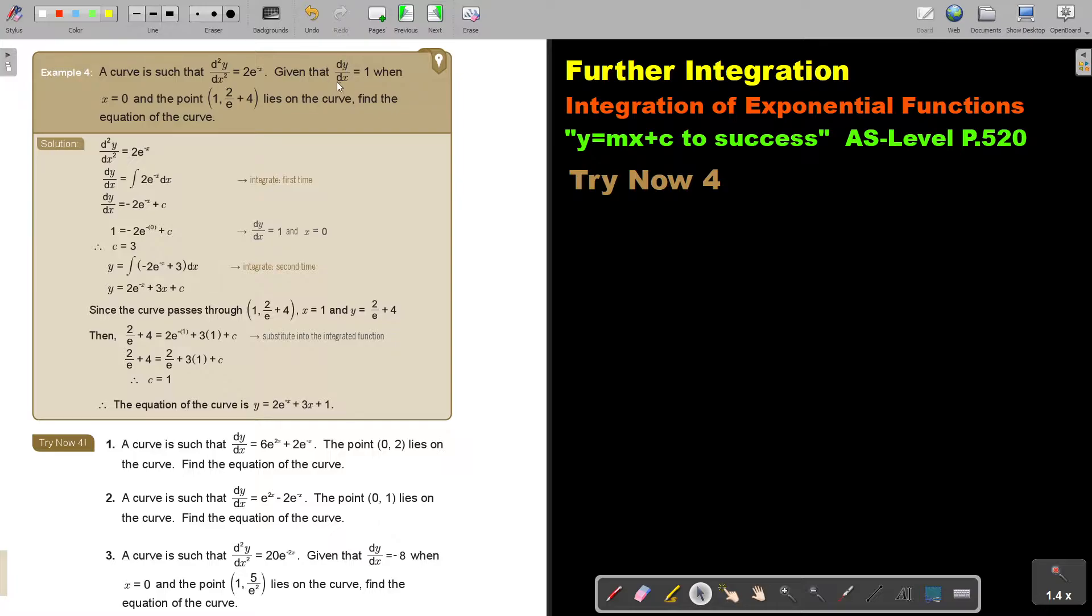Given that dy/dx, the first derivative, is 1 when x is 0, and the point (1,4) lies on the curve, find the equation of the curve.